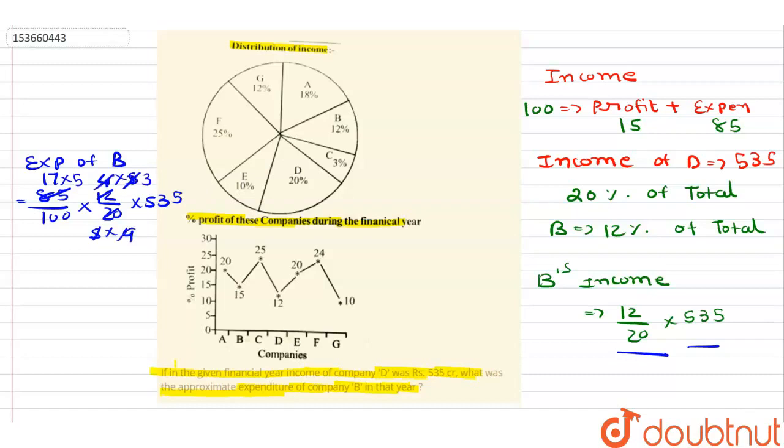Yaha pe 5 will get cancelled. So finally I can write 51 upon 100 into 535. So if I will find the answer, that would be approximately equal to 272.xx. So around, we can say, it is approximately 270. I hope this concept is clear to you guys. Thank you so much.